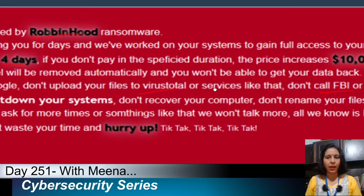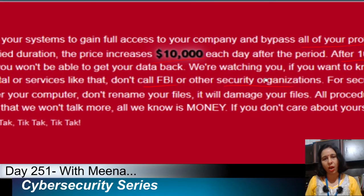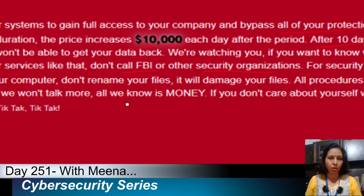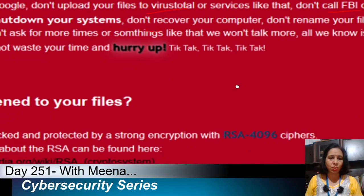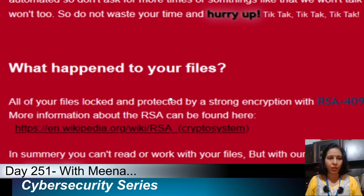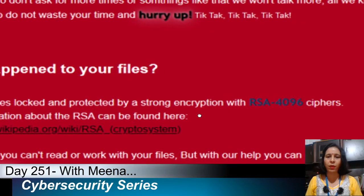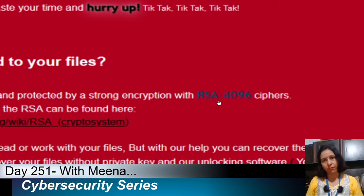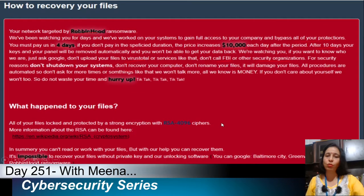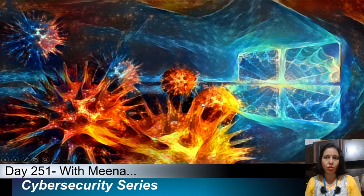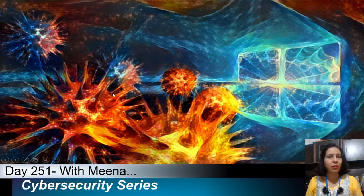Your data is now encrypted with a high encryption algorithm. All of your files are locked and protected by strong encryption using RSA public and private keys with a very heavy 4096-bit key size. Without the key you will not be able to decrypt your data. This is the stage where prevention beforehand is critical, because now your Windows system is already infected with the RobinHood ransomware.